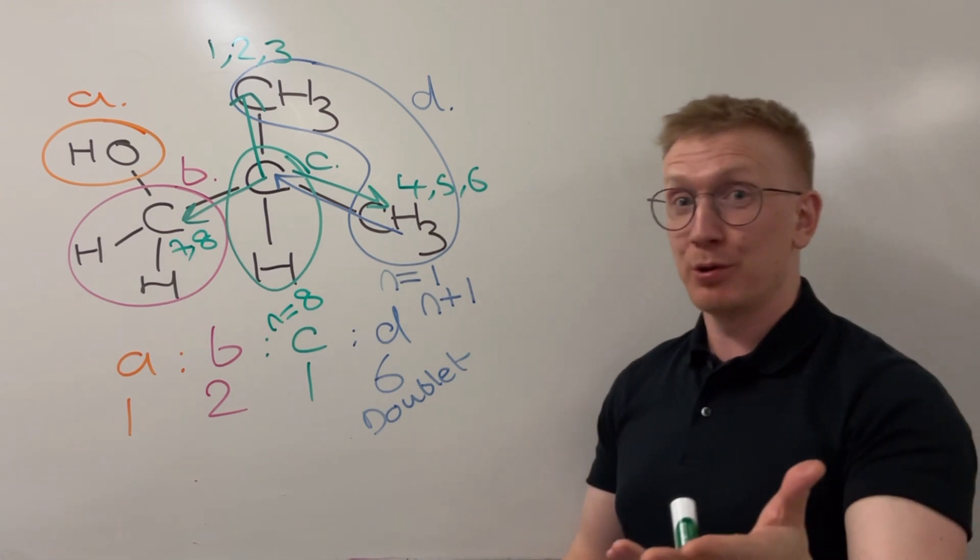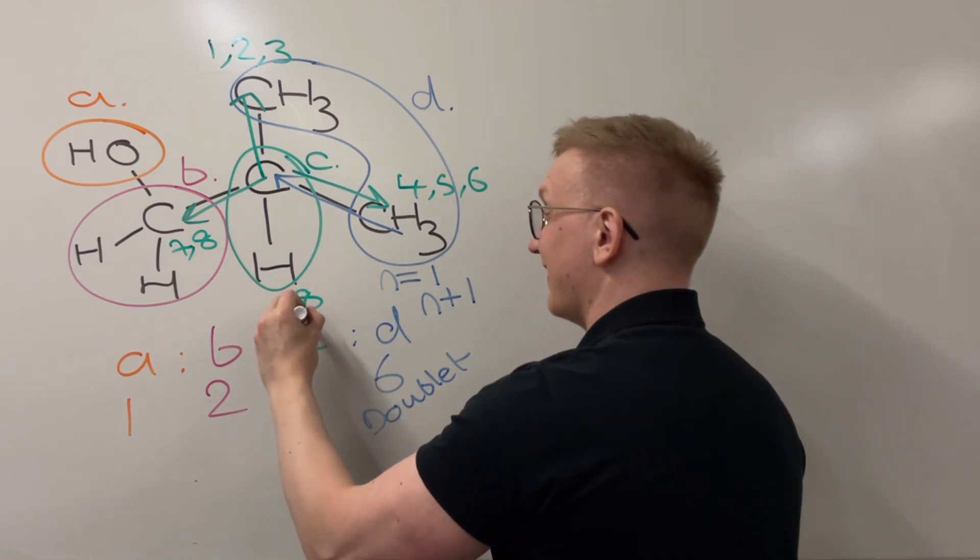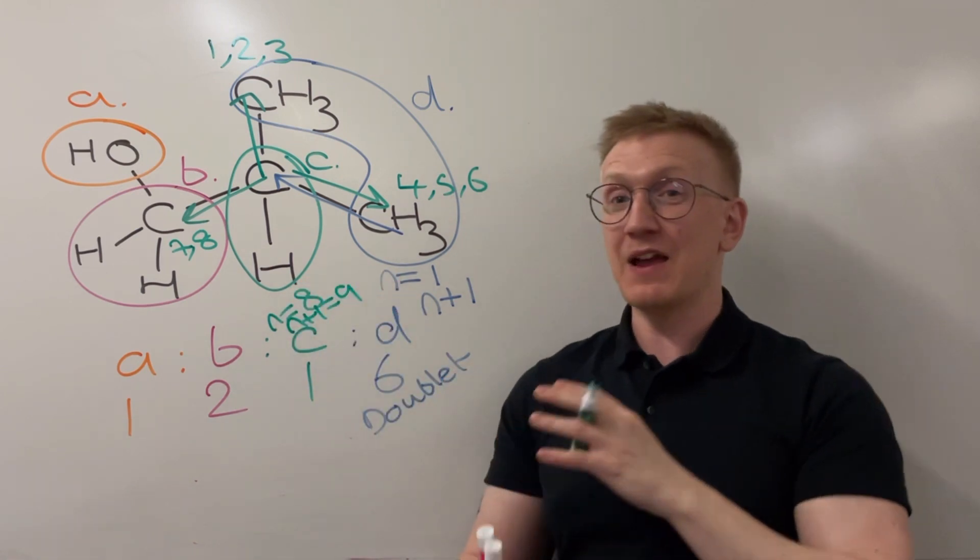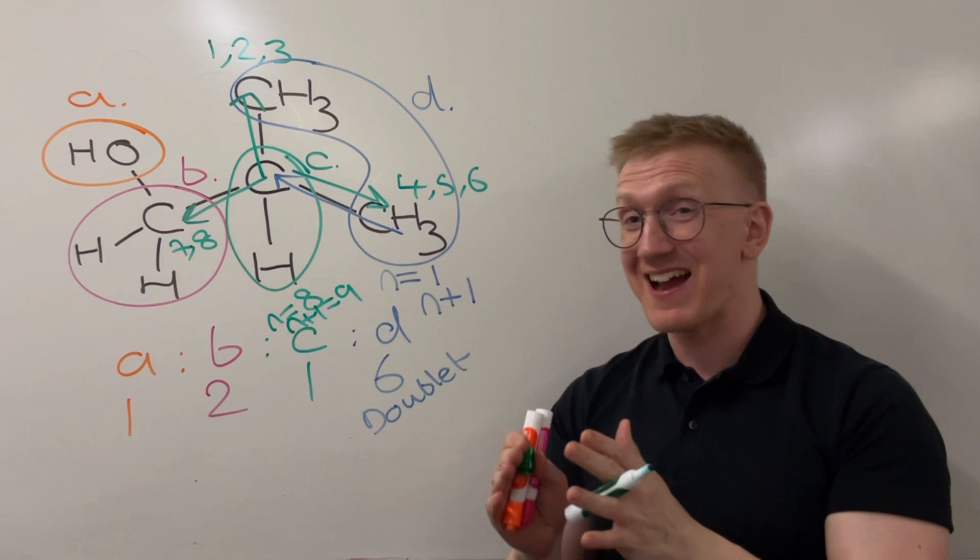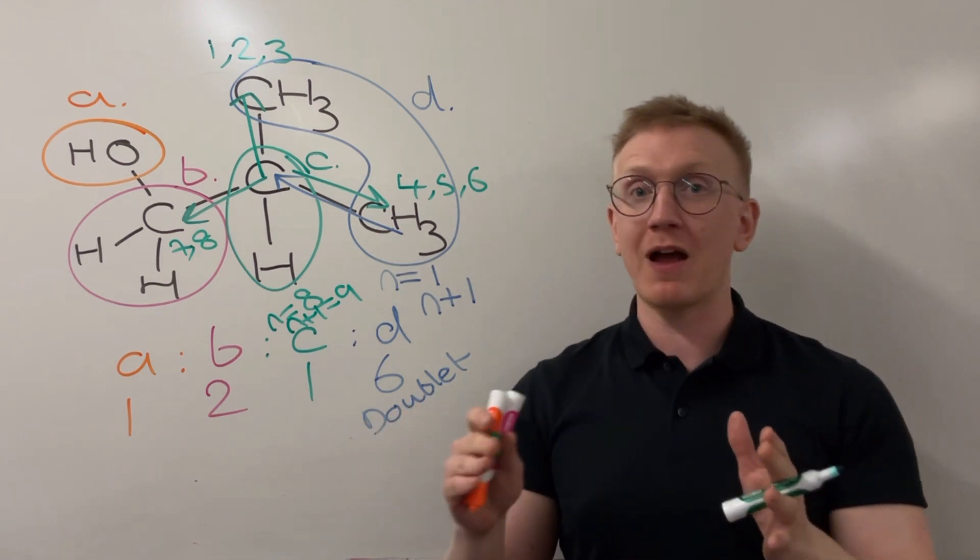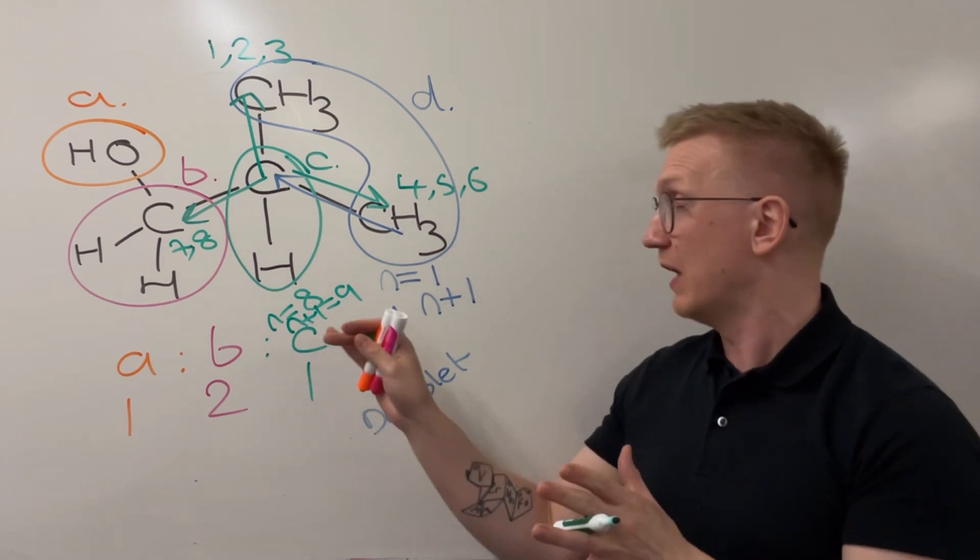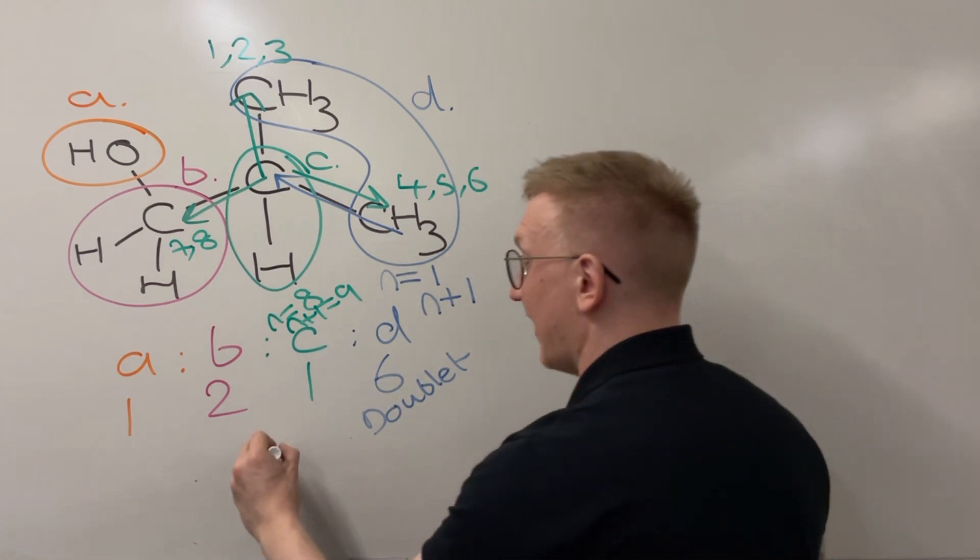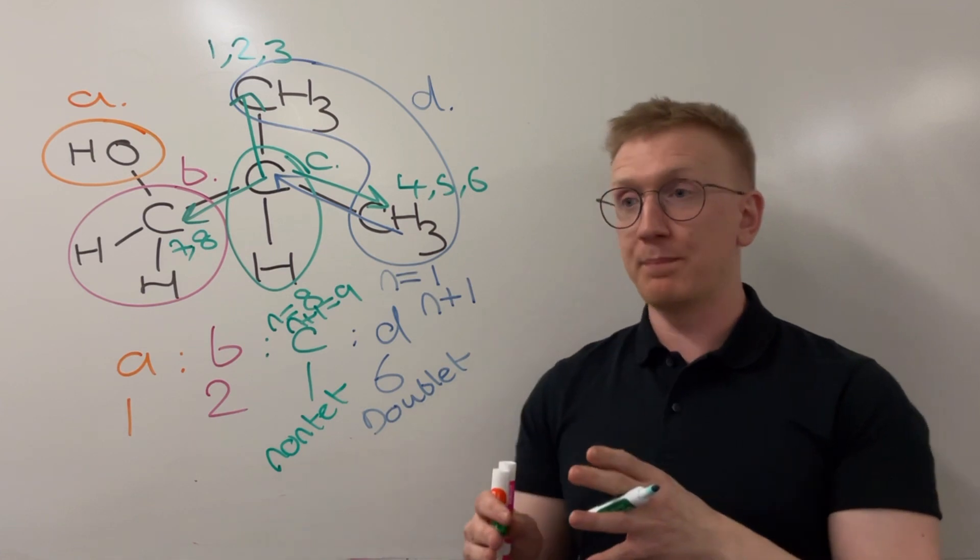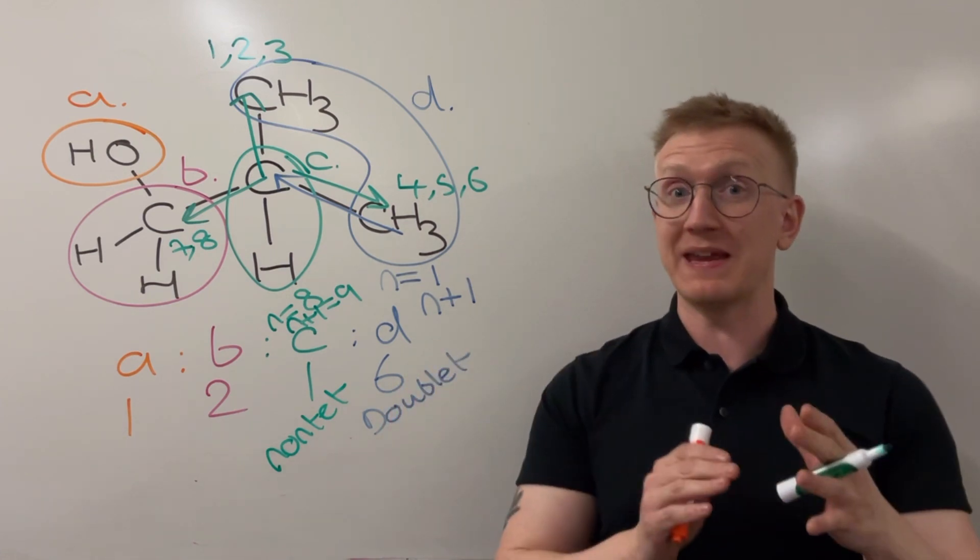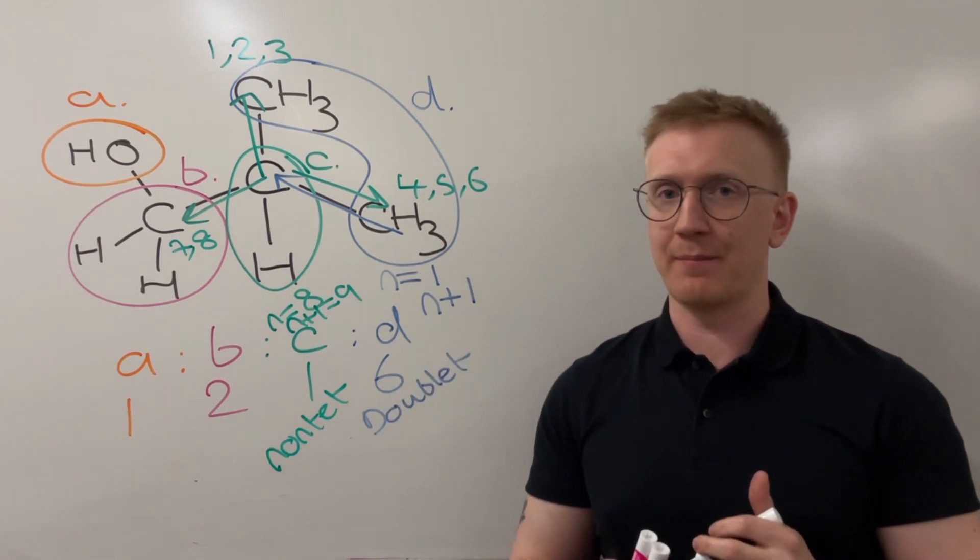According to the N plus one rule, what that means is I'm going to have a peak for C that is split into nine sub-peaks. So it's definitely described as a multiplet at A level. You can actually call it a nontet if you want. That's the technical term for it, but a multiplet of nine sub-peaks is absolutely fine for exams.